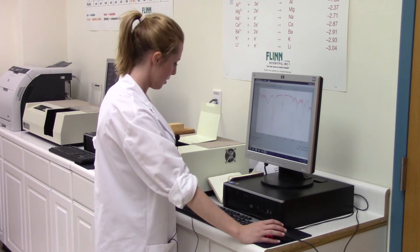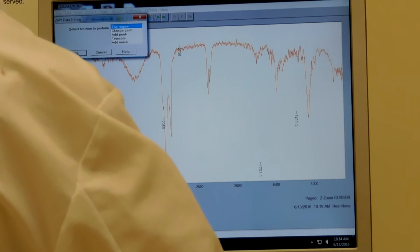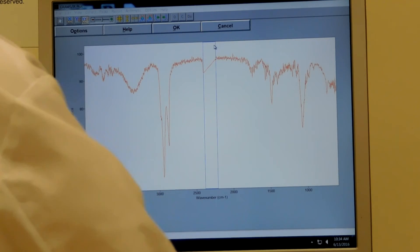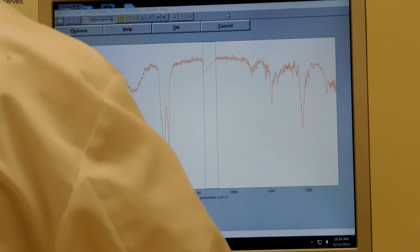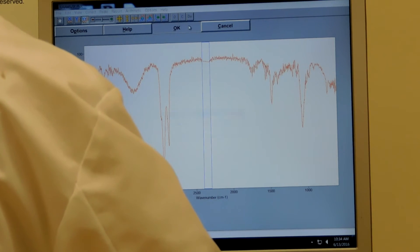After you apply the baseline, you can go to arithmetic again and this time you're going to zap, zap region and hit OK. What we're getting rid of is the CO2 peak, which happens somewhere between 2,500 and 2,000 reciprocal centimeters. So that's that little peak right there. You want to get as close to eliminating only that as possible. When you're done you can click OK and say you want to replace it.